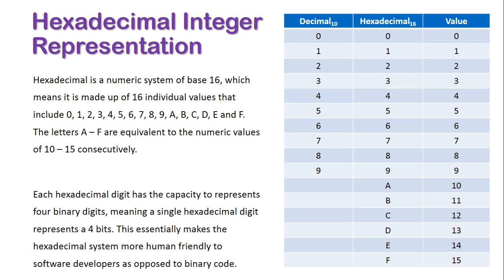The letters A and F are the equivalent to the numeric values of 10 to 15 consecutively. So A is equal to 10, B is equal to 11, C is equal to 12, D is equal to 13, E is equal to 14 and F is equal to 15, giving us a total of 16 actual values as you can see from the table to the right.